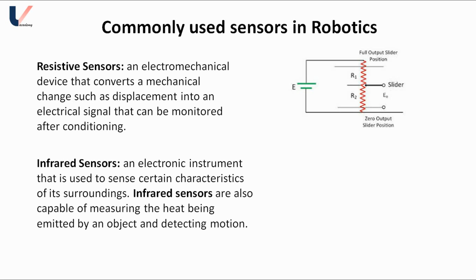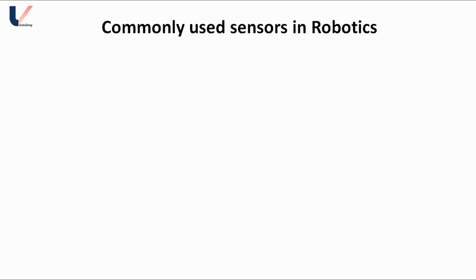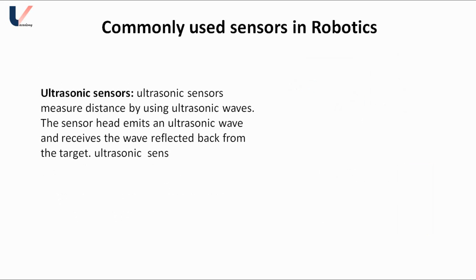Infrared sensors can be used to detect the distance between targets by measuring the time between emission and reception. Similarly, ultrasonic sensors use ultrasonic waves in place of infrared waves and can also be used to detect the distance between targets.